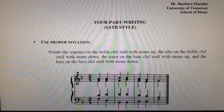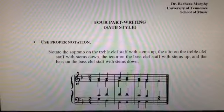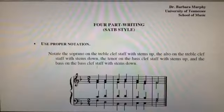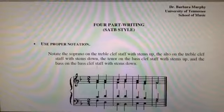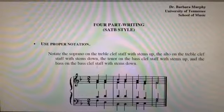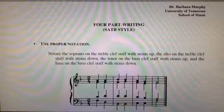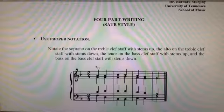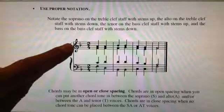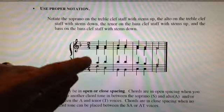So this is the first part writing rule lecture. I have pulled up now our PDF of the part writing rules by Dr. Murphy at the University of Tennessee. She's in the theory department there and has put out what I think is really the finest overview of part writing that we have. We have this first rule: use proper notation. When you're writing for the soprano, the stems will go up. Alto stems will go down. Tenor stems up. Bass stems down.